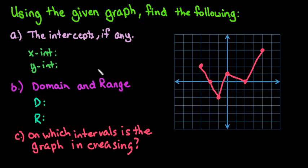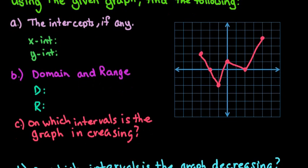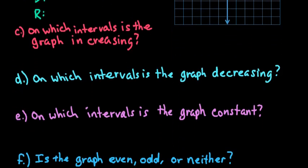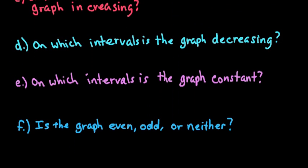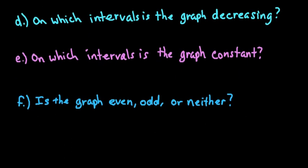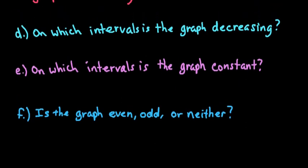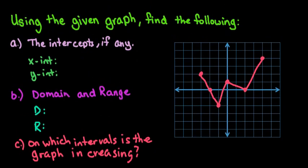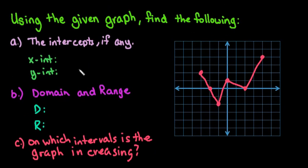Hi, for this video we're going to use the given graph to find some of the following things. We're going to be looking for the intercepts, the domain and range, on which interval is the graph increasing, on which interval is the graph decreasing, on which interval is the graph constant, and is the graph even, odd, or neither. It is possible for some of these not to work, so sometimes your graph doesn't meet the conditions, maybe it doesn't have any decreasing intervals or constant intervals, and so you would just put that.